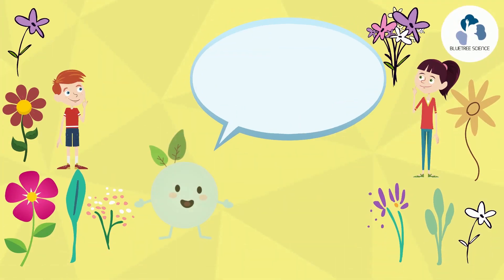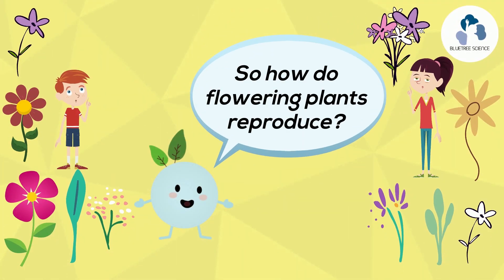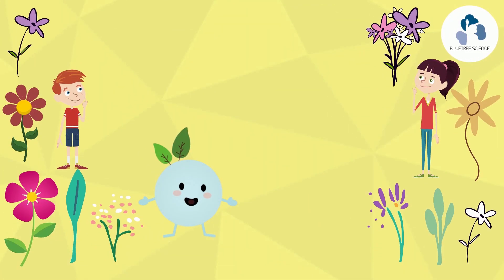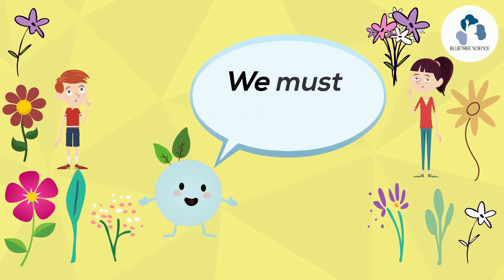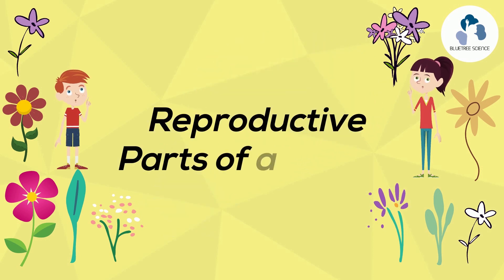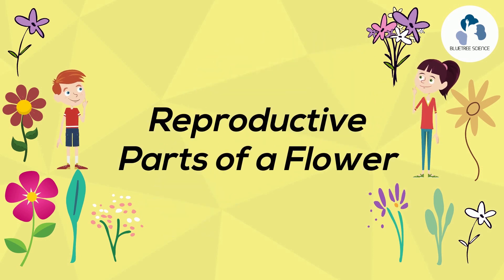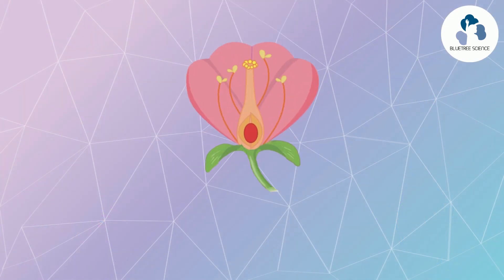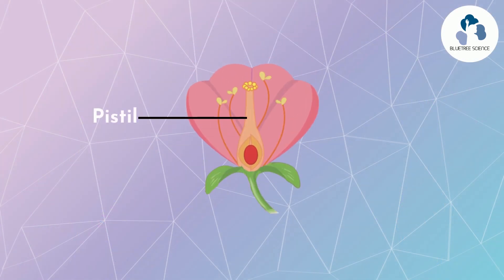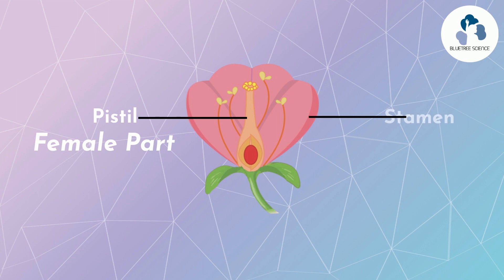So how do flowering plants reproduce? Before we get into that, we must first know the reproductive parts of a flower. That's the pistil, which is the female part of the flower, and the stamen, the male part of the flower.